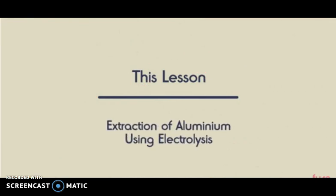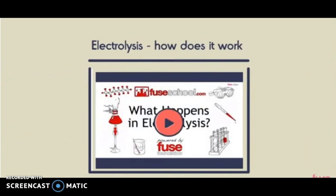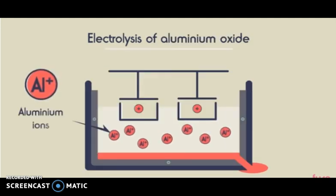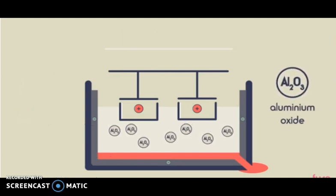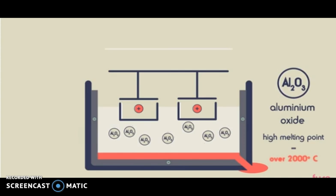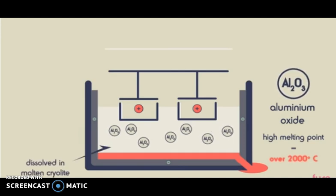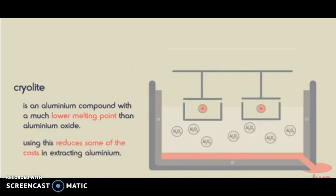In this video we are going to look at how aluminium is extracted using electrolysis. In electrolysis, ions need to pass through the electrolyte, so the aluminium oxide must be made molten. Aluminium oxide has a very high melting point — over 2000 degrees Celsius — so instead of melting it directly, the aluminium oxide is dissolved in molten cryolite. Cryolite is an aluminium compound with a much lower melting point, and using it reduces some of the costs in extracting aluminium.